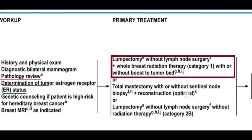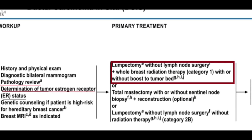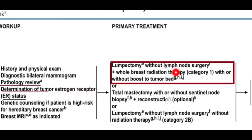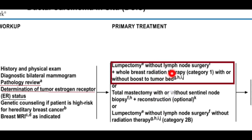For ductal carcinoma in situ, the preferred management is lumpectomy without lymph node surgery, combined with whole breast radiation therapy. This is category one — the preferred way of management according to the NCCN (National Comprehensive Cancer Network) oncology guidelines — with or without boost to the tumor bed. The best treatment for DCIS is surgical removal of the lump (lumpectomy) without lymph node surgery and with whole breast radiation.